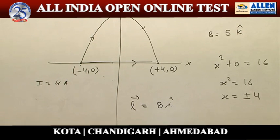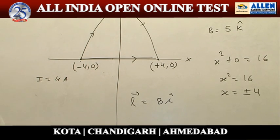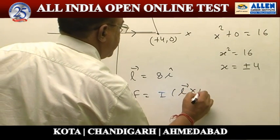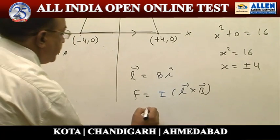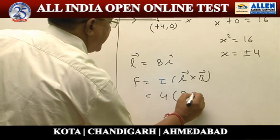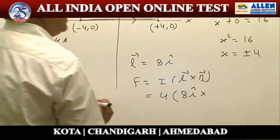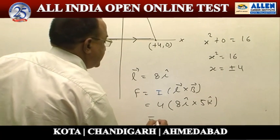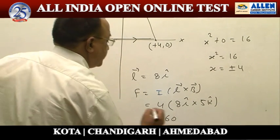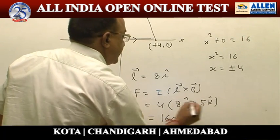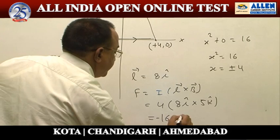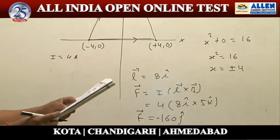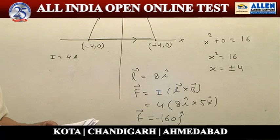The effective length can be represented by the vector L = 8î. Applying the force equation F = IL × B, with I = 4 A, L = 8î, and B = 5k̂, the magnitude is 160 N. Since î × k̂ = −ĵ, the force is 160 N in the −ĵ direction. So option 3 is the correct answer.